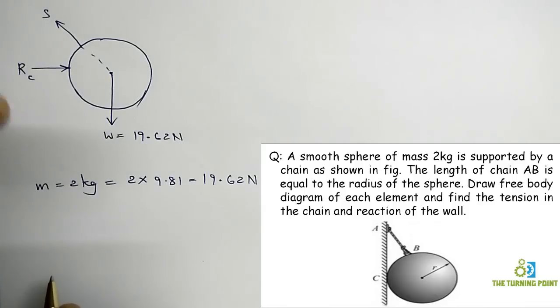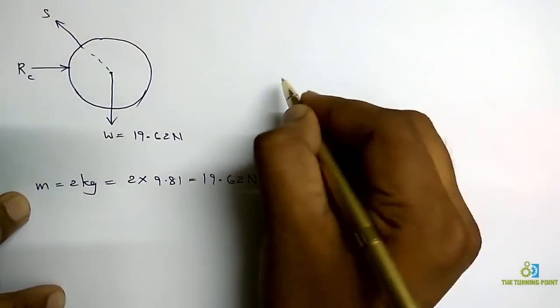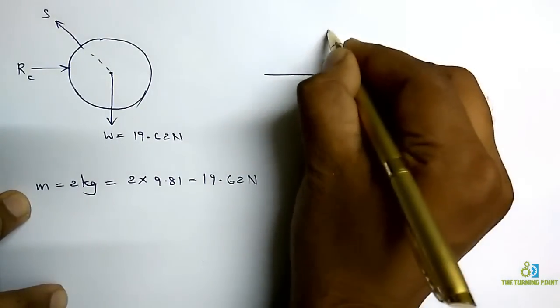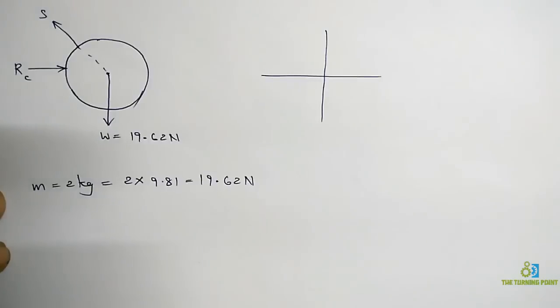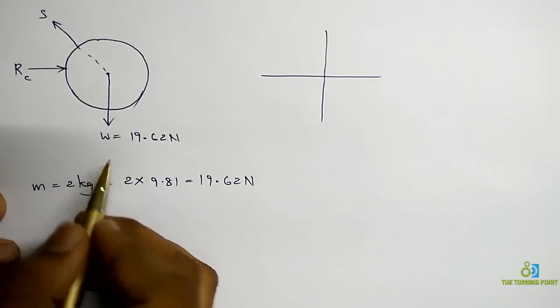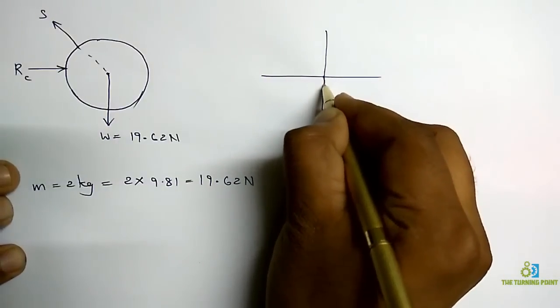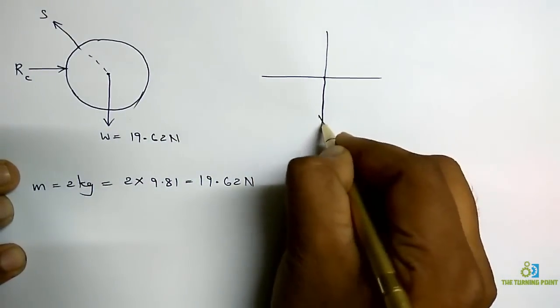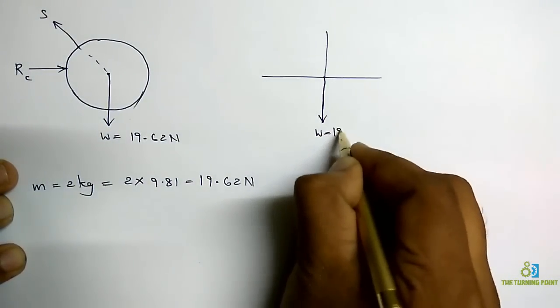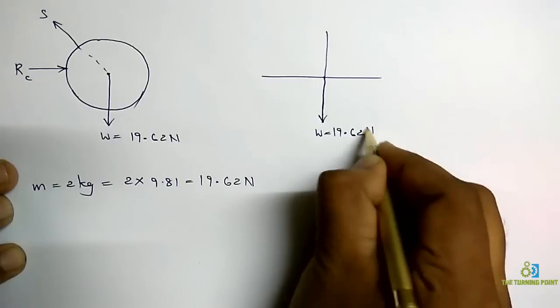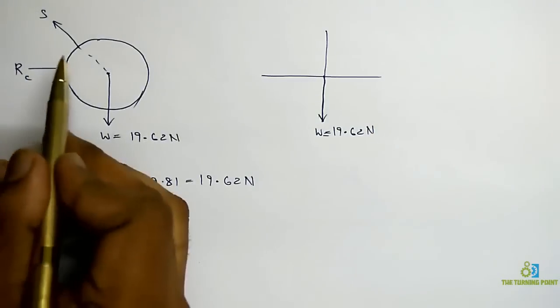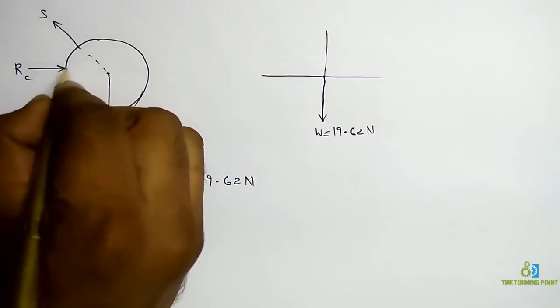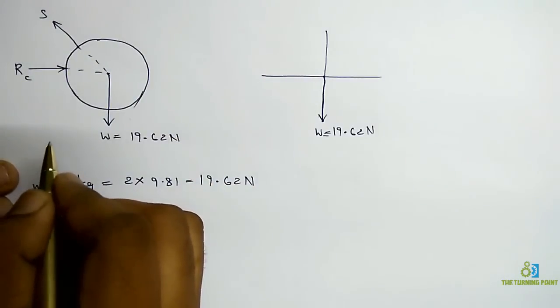So now I am transferring these forces onto plane for our convenience. So first I will draw the plane, x-axis, y-axis. Now first weight. So weight acts vertically downwards from this point. So this is weight which is 19.62 Newtons. And next tensile force S in the string. So that is inclined force. So value is not given there. So inclination we have to find.